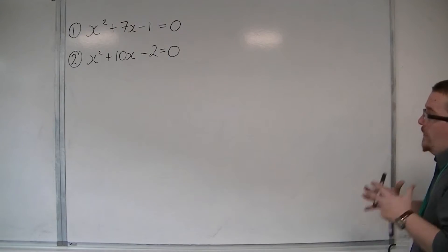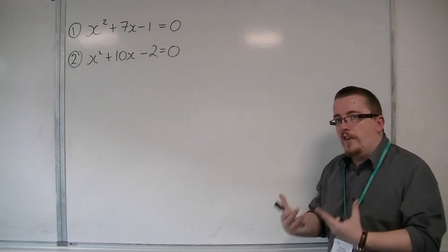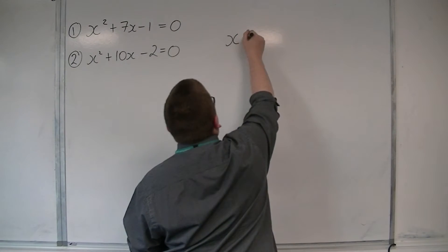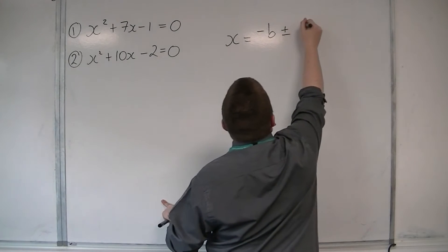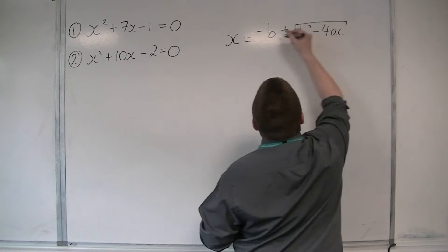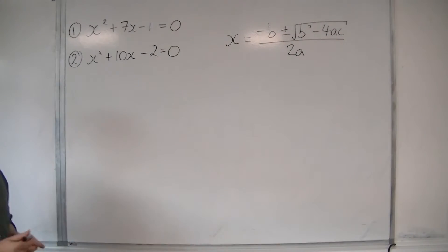So in this video, we're going to be looking at how the quadratic formula is used. So first off, this is what the quadratic formula looks like. Now, x is equal to minus b plus or minus the square root of b squared minus 4ac all over 2a. So that's the quadratic formula.